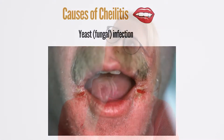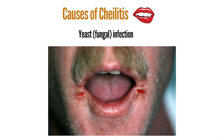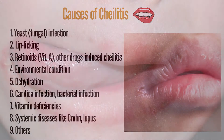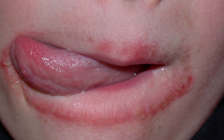There are several different causes of chylitis. The most common is yeast infection, as a result of saliva. Lip-licking chylitis is usually seen in 7 to 15 year olds and appears as a scaling pink band around the mouth. This is caused by repeated licking of the lips.